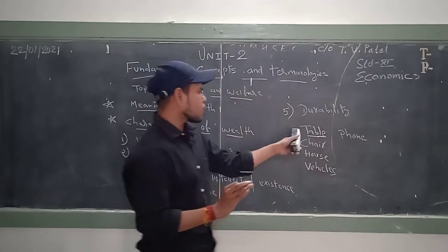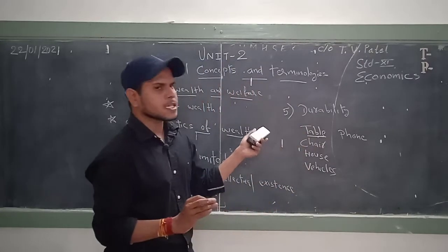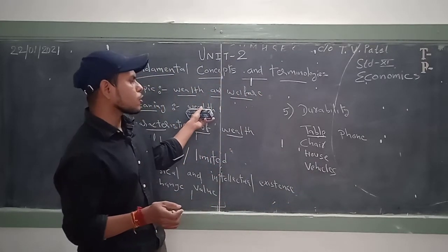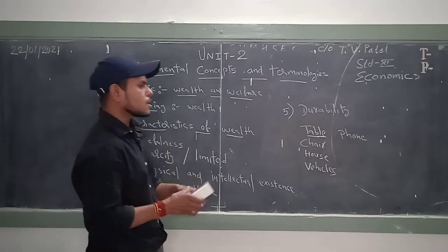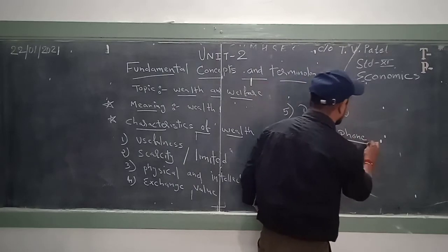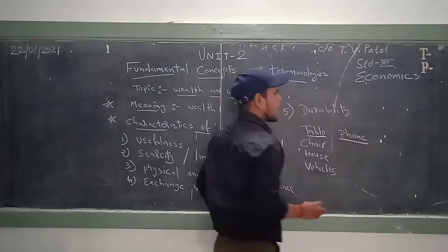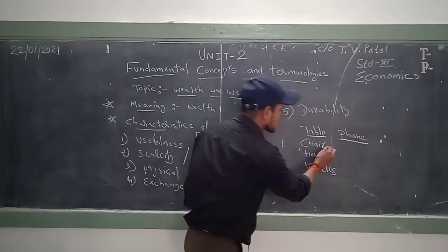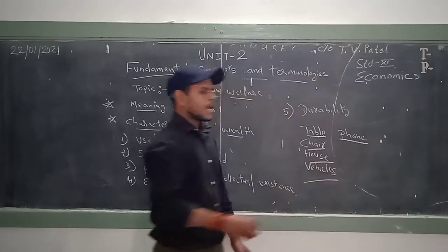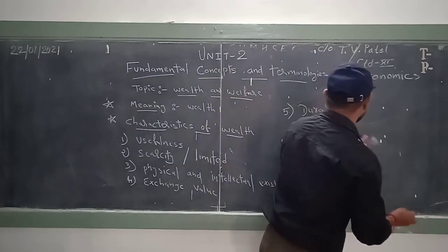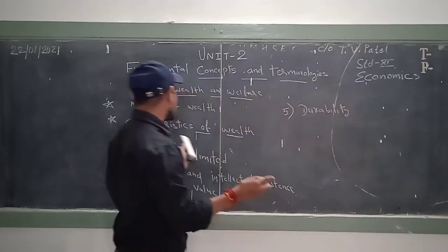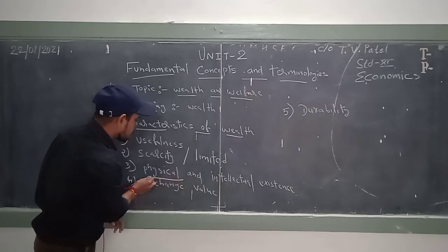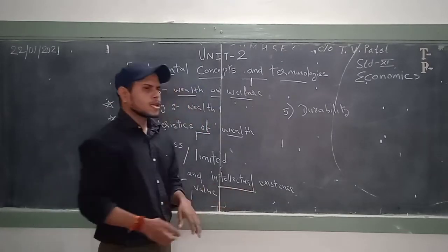For example, I am writing 'table' on the blackboard — that is just a word. But the same table physically present here possesses the value of wealth. Similarly, I am writing 'phone' on the blackboard — we cannot consider that as wealth. But since I am having a phone here, it is wealth for me. The same applies to chair, house, and vehicle — anything physically present, which also has usefulness and scarcity, is considered wealth.